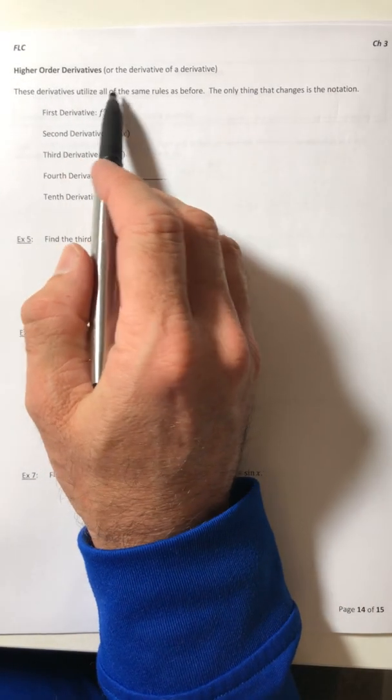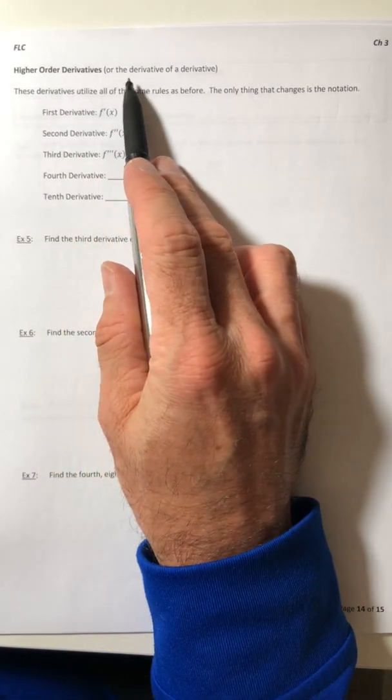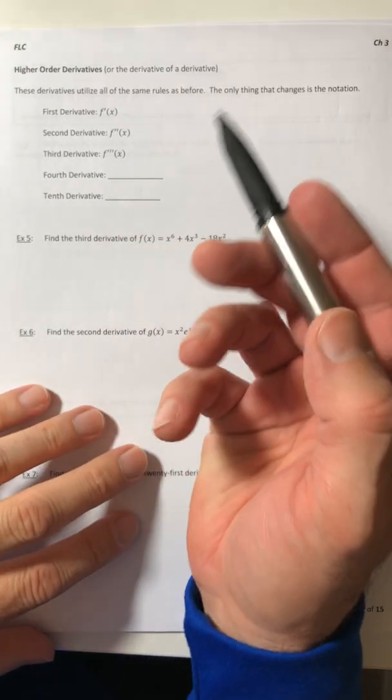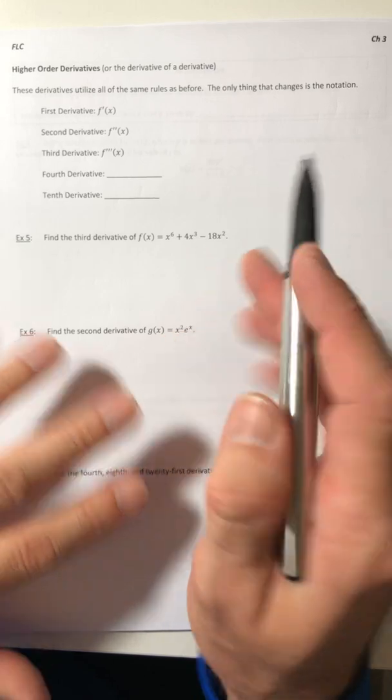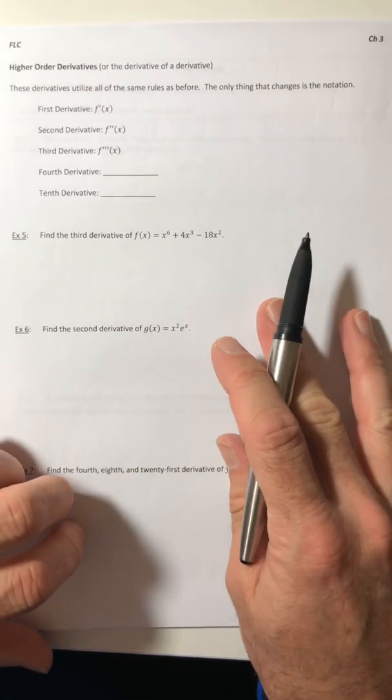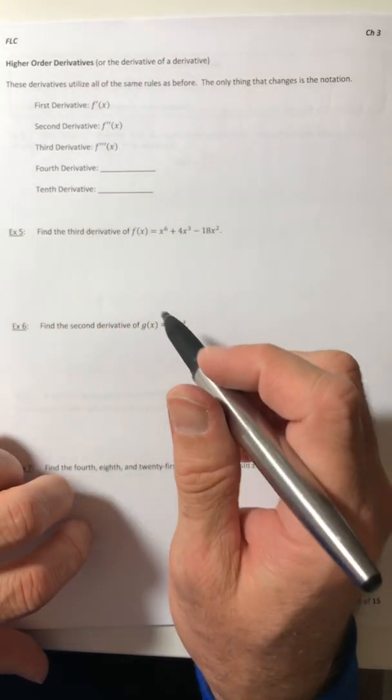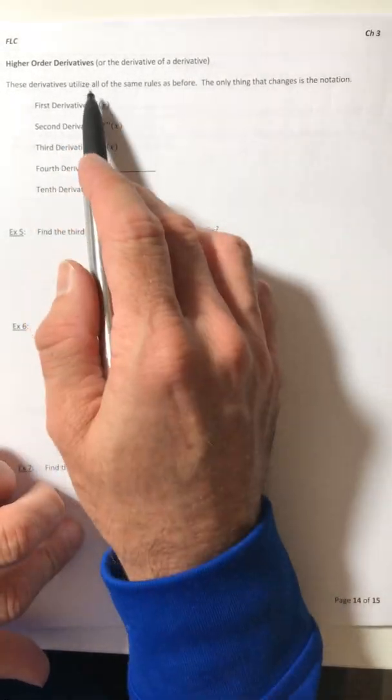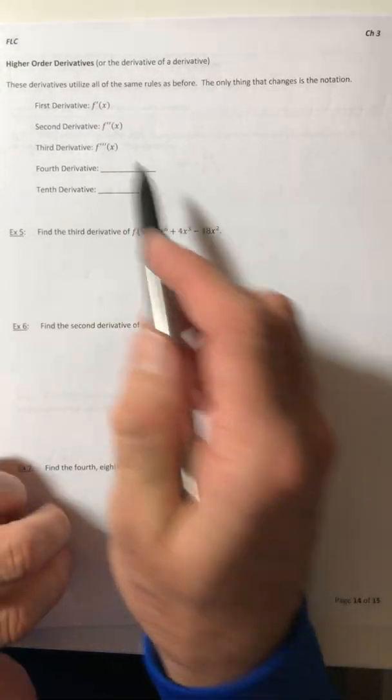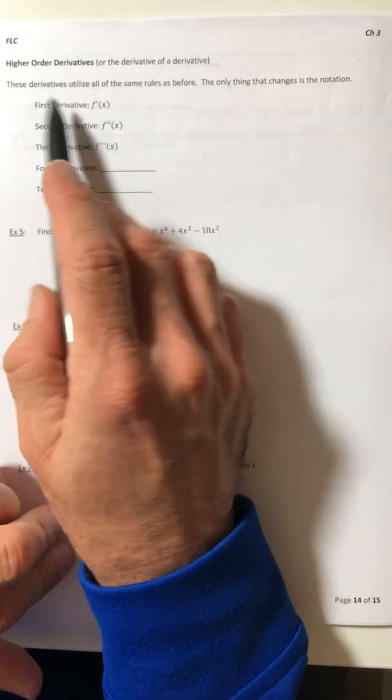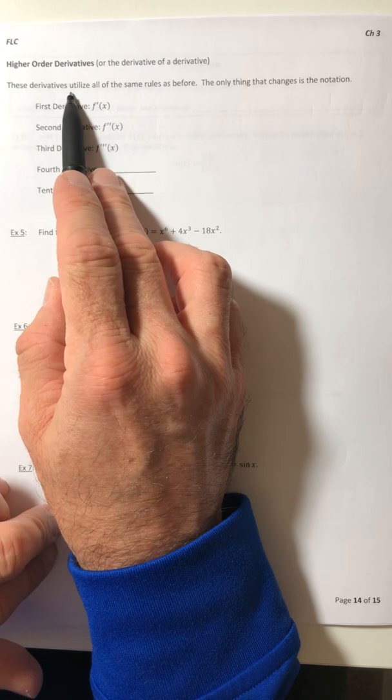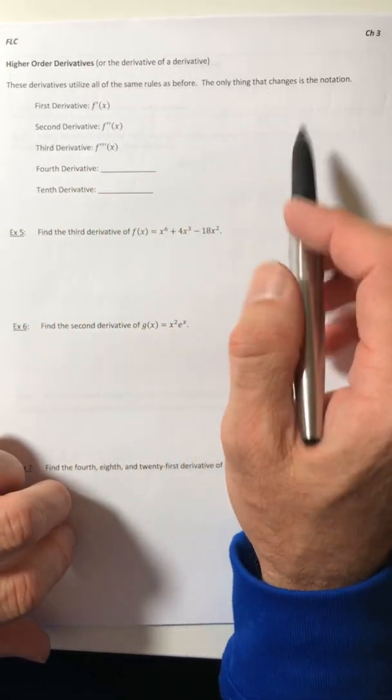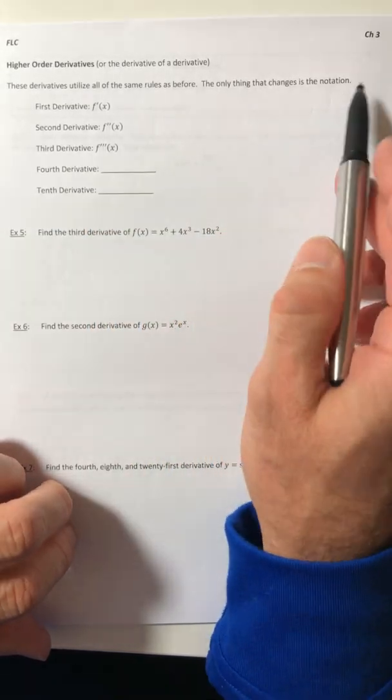Alright, higher order derivatives, which is basically the derivative of a derivative. Because the derivative itself is still a function, and we can find the derivative of any function, which means you can find the derivative of a derivative of a derivative of a derivative. So you can go on basically forever in most cases. These derivatives are going to utilize all of the same rules as before. Nothing changes except for the notation.